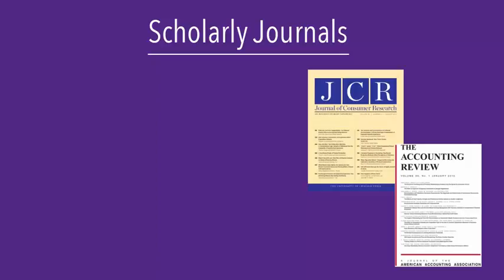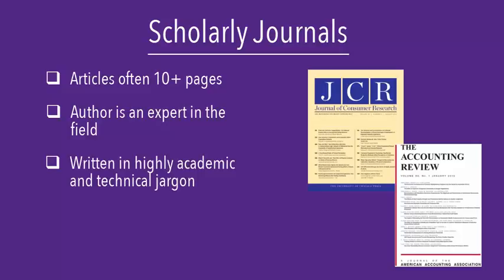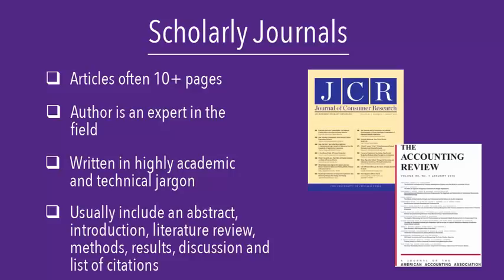Scholarly journals, sometimes called academic journals, don't look like magazines at all. Articles are often long, usually more than 10 pages, and are written by experts, such as a professor, in a field. The language of the article is usually highly academic and contains technical jargon related to the subject matter.